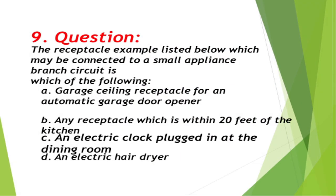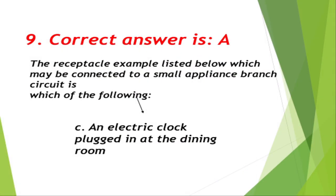Question number 9: The receptacle listed below which may be connected to a small appliance branch circuit is which of the following? A. A garage ceiling receptacle for an automatic garage door opener, B. Any receptacle which is within 20 feet of the kitchen, C. An electric clock plug-in at the dining room, D. An electric hair dryer. Correct answer is C, an electric clock plug-in at the dining room.